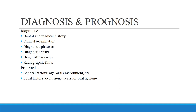There are two factors — general and local. General factors include all systemic problems; medical history has to be properly evaluated. Local factors include vertical overlap of anterior teeth, impactions, tooth mobility, tooth angulation, tooth structure, and crown-root ratio. Diagnosis consists of dental and medical history, clinical examination, diagnostic pictures, casts, wax-up, and radiographic films. Prognosis considers general factors, age, oral environment, local factors, occlusion, and oral hygiene status.